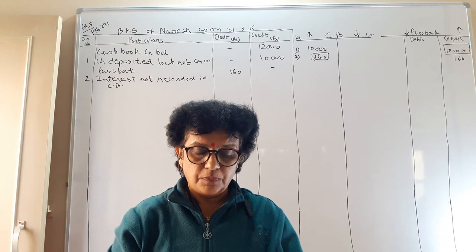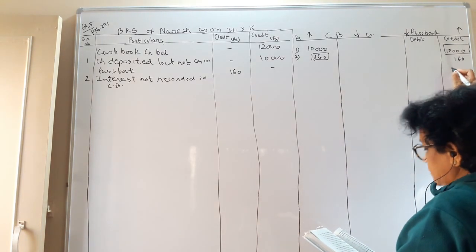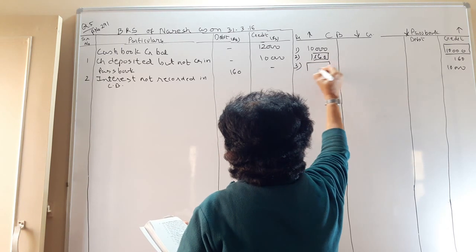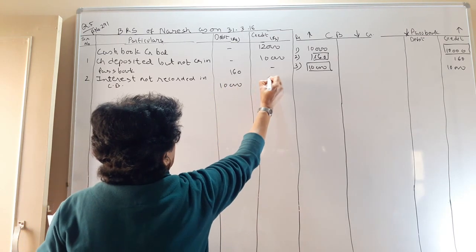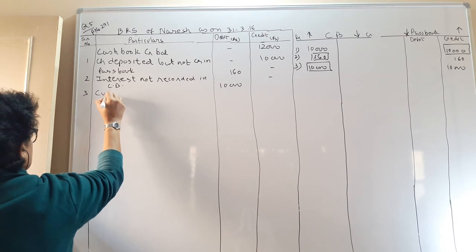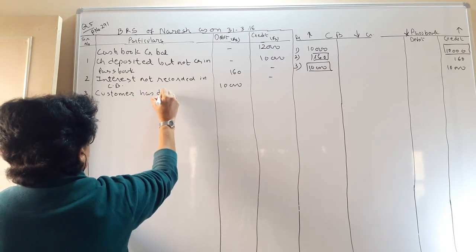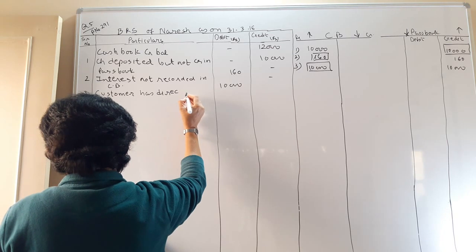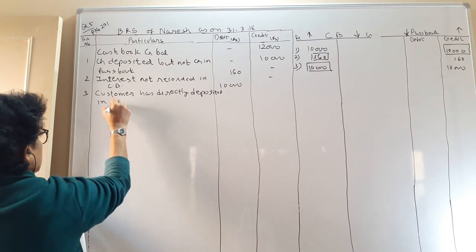Transaction 3: a customer has deposited 10,000 directly into the bank account. Our bank balance has already increased by 10,000 — the bank has credited it. We have to debit this in our cash book. So we debit rupees 10,000. Entry: customer directly deposited into bank — debit rupees 10,000.